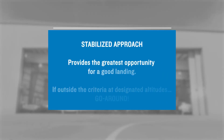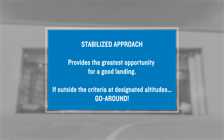A stabilized approach provides the greatest opportunity for a good landing and provides for enhanced safety for your flight operations. If you find yourself outside of your established criteria for a stabilized approach when below designated altitudes, take the safe path and conduct a go-around. Note that many general aviation operators designate 500 feet AGL as the go-around altitude if not stabilized.